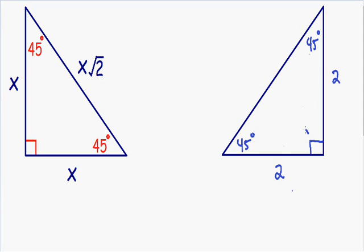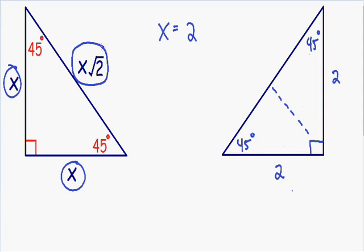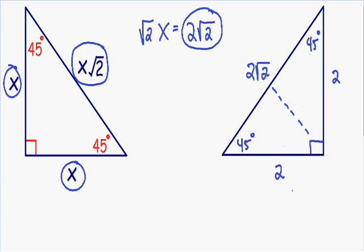The hypotenuse is the side opposite the 90-degree angle, and we know the length of the shorter sides is equal to 2. Our shorter sides are always equal to x, so x equals 2. The length of the hypotenuse is x multiplied by the square root of 2, so we multiply 2 by the square root of 2. That gives us 2 times the square root of 2, which is the length of our hypotenuse. We have now solved all three sides of this triangle.